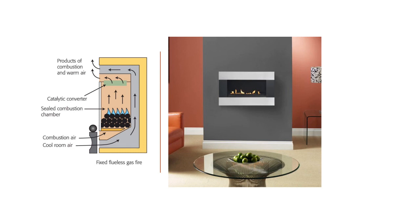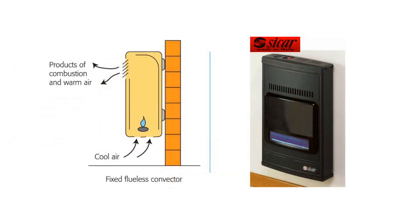Flueless gas fires bring air from the room and expend the products of combustion back into the room. In order to do that safely, they use a catalytic converter so that the products of combustion coming back into the room are safe to breathe. Here's another example of a fixed flueless convector. You won't come across many of these — normally they are LPG heaters, but you may occasionally come across one that's linked up to the gas pipelines.